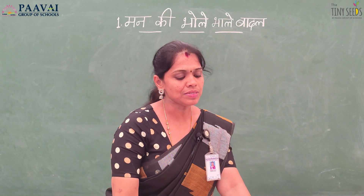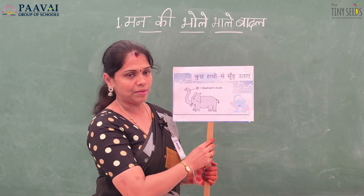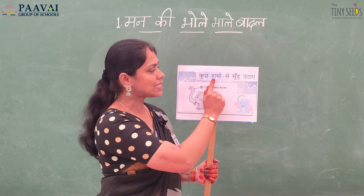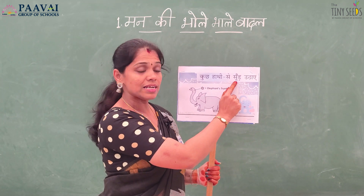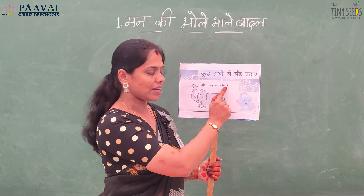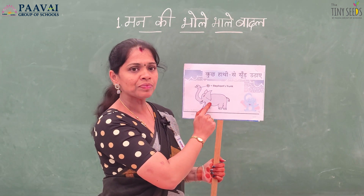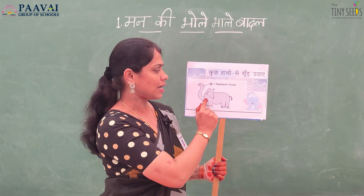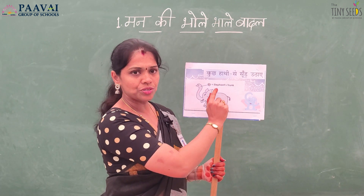Next comes: Kuchh haati se soond uthaye. You have some clouds which look like the elephant — haati — as if the elephant is raising its soond. Soond ka matlab hai trunk. So the poet can see some clouds in the shape of the elephant's trunk.